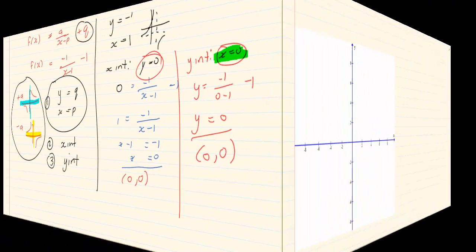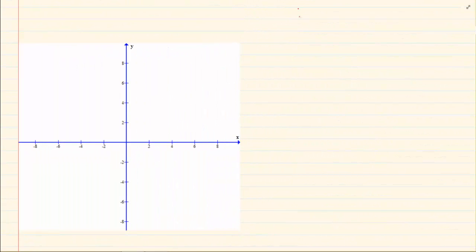Now let us draw the graph. Alright we have the two coordinates 0 and 0. And then we have Y is equal to minus 1. X is equal to 1. Those are asymptotes.